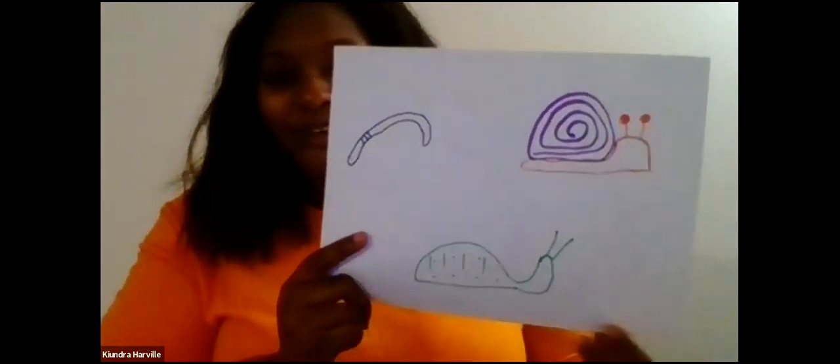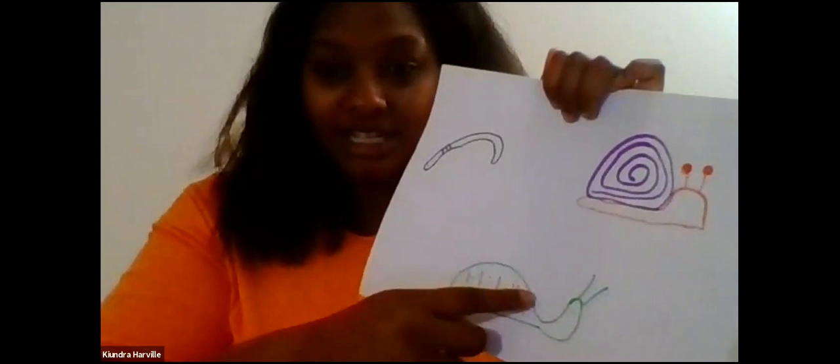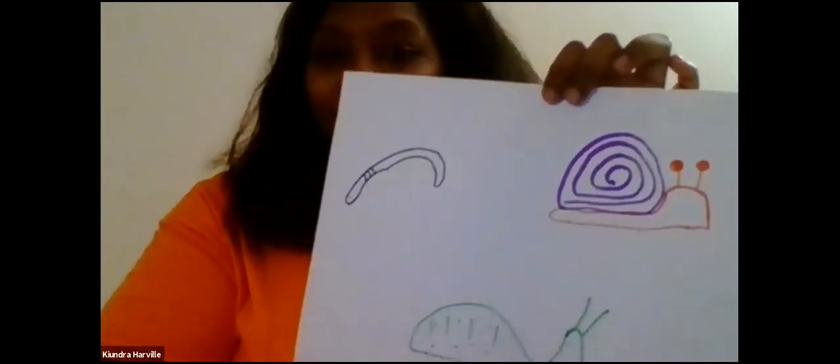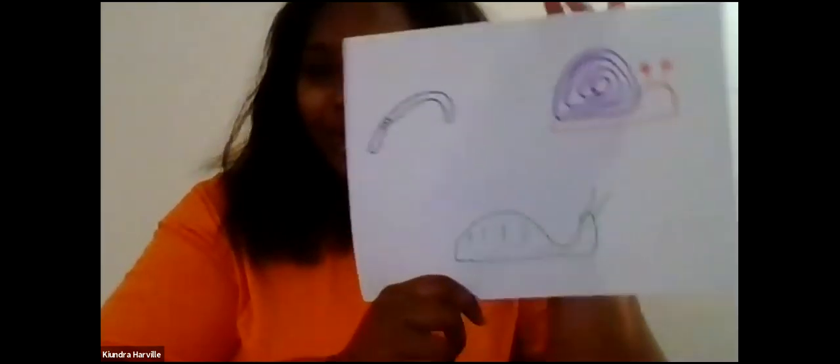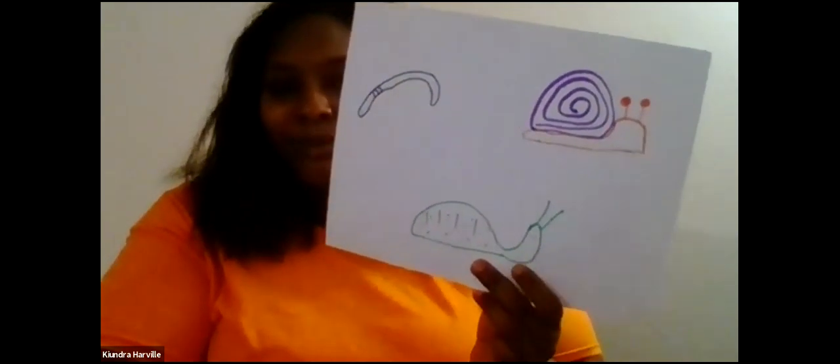These are all the things that we've been talking about this week. See, my worm has the head and the tail end. My snail has the body and antennas and a shell. And here's my slug — he doesn't have a shell. You guys did awesome. Give yourself a big clap for all your hard work and doing such an amazing job.